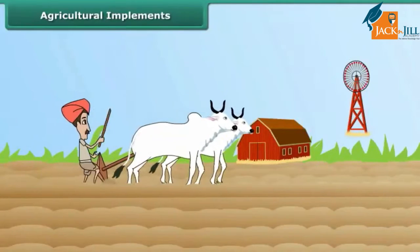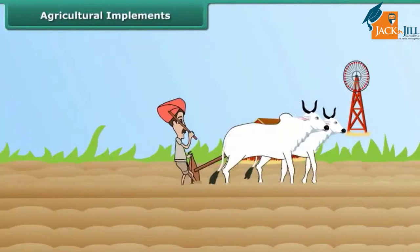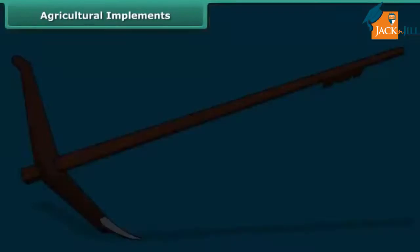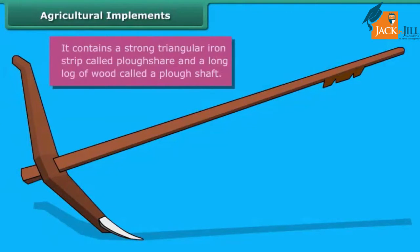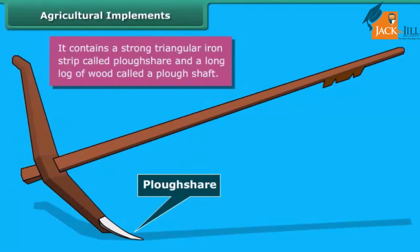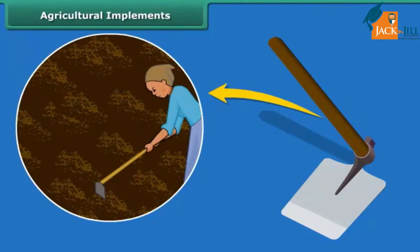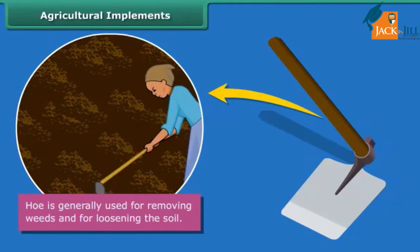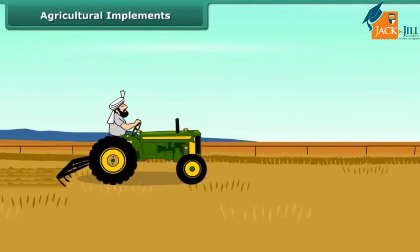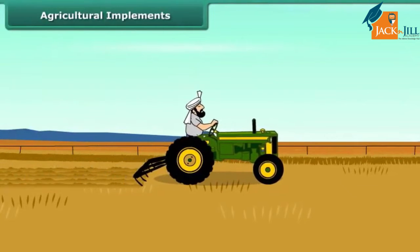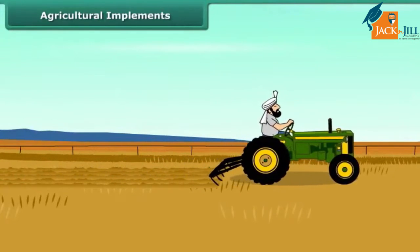A farmer plowing the field uses a plow made of wood. It contains a strong triangular iron strip called a plowshare, and the main part of the plow is a long log of wood called a plow shaft. Another tool used in plowing is a hoe, used for removing weeds and loosening the soil — it has a long rod of wood with a strong, broad and bent plate of iron that works like a blade. Nowadays, plowing is done by a tractor-driven cultivator, which saves both labor and time.